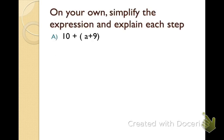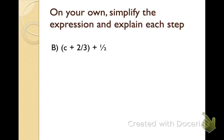Now you're going to try some of these on your own using the same process. You'll either rearrange numbers or change their groupings, then explain each step by naming the property used: commutative property of addition, commutative property of multiplication, associative property of addition, or associative property of multiplication. You can rewind to review those properties or look in your notes. Enter your answers and explanations into the text box. We have problems A, B, and C.